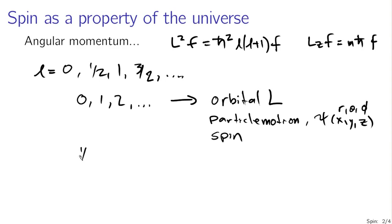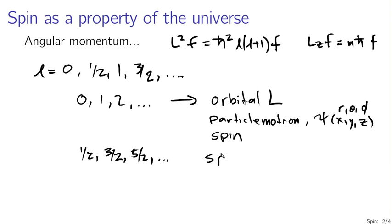But spin is really more interesting when we're talking about the half integers: 1/2, 3/2, 5/2, etc. In these half-integer cases there isn't any nice wave function that we can express, so we're really only talking about spin under these circumstances. I can't give you a good argument or a good answer for this other than saying this is essentially just a property of the universe.